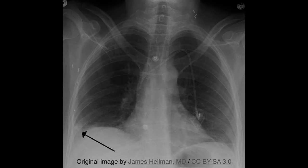Another rare but suggestive finding is Westermark sign, which is not evident in this x-ray. In contrast to Hampton's hump, Westermark sign occurs when peripheral oligemia due to infarction appears on the x-ray as a focal wedge-shaped area of hyperlucency — that is, increased blackness — as opposed to opacity.